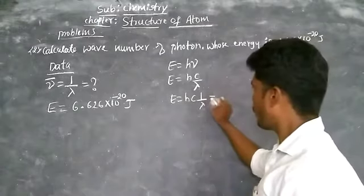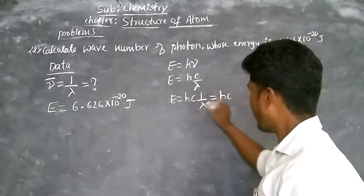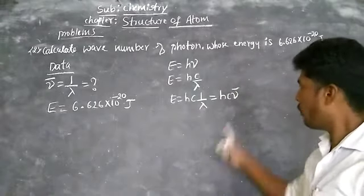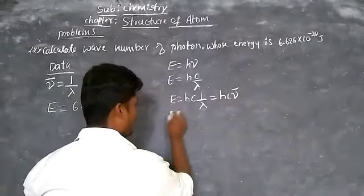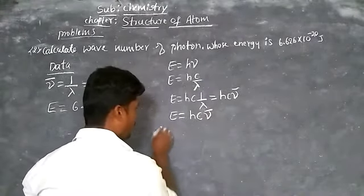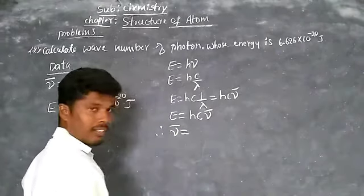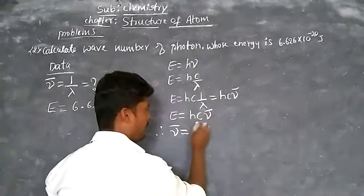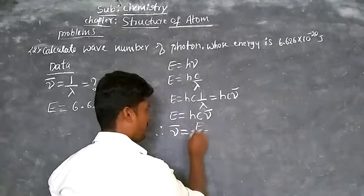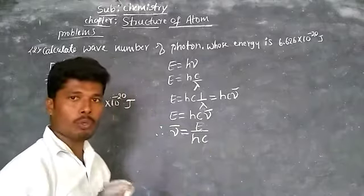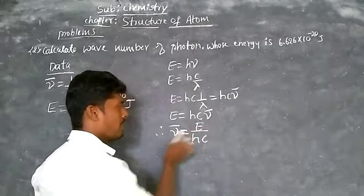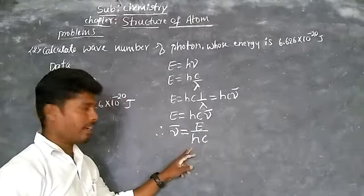From the equation E equals H·C·nu-bar, find the relation for nu-bar. Therefore nu-bar equals E divided by H·C. There is no unit conversion needed — write directly: nu-bar equals E divided by H·C.